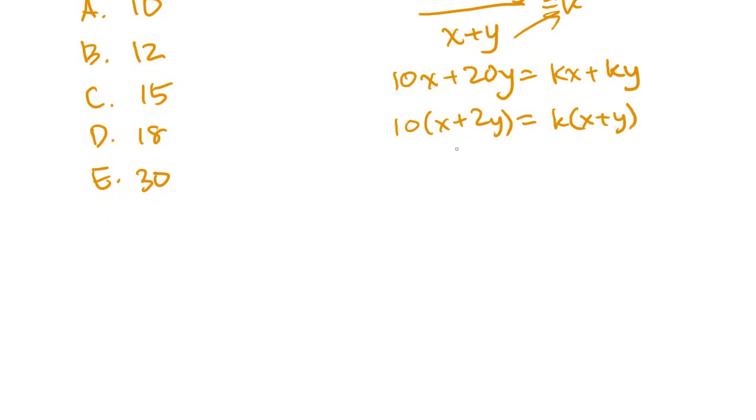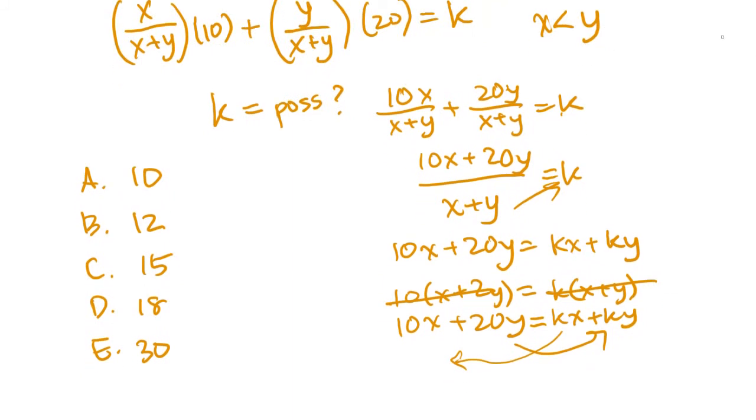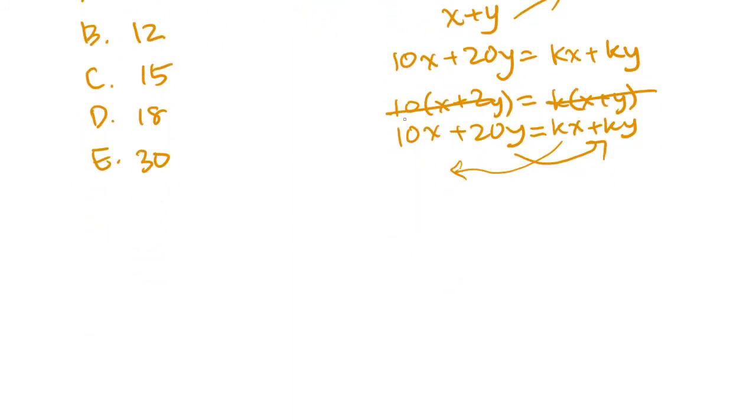But you try manipulating different things and seeing if anything will make sense. I shouldn't have factored anything out. What I should have done is probably try to get x and y on its own side. Because we don't know what these numbers are, so I'm going to try to set up an equation where we can actually compare x and y and find out if it's true or not.